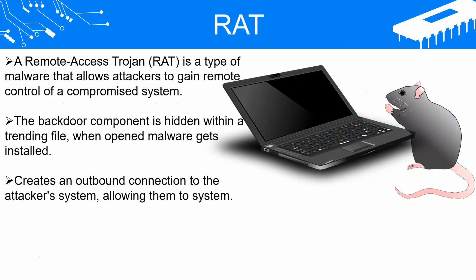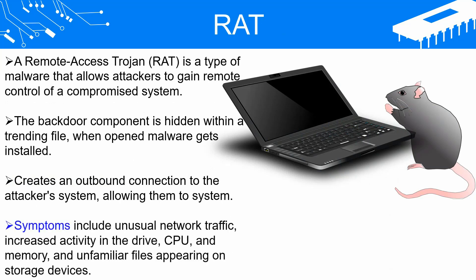A remote access trojan (RAT) is a form of malware that allows attackers to gain remote control over a compromised system. Frequently, the backdoor component for remote control is concealed within a host file associated with a popular trend, such as a new movie, music album, or game. When the victim opens the host file, the remote control malware installs on their system and a notification is transmitted to the attacker. In most cases, RATs create an outbound connection to the attacker's system, which enables them to manipulate the victim's data and system operations. RAT infections can cause various symptoms such as unusual network traffic, a system that fails to activate the screensaver or timed sleep mode, increased activity in the drive, CPU, and memory, and unfamiliar files appearing on storage devices.